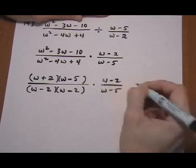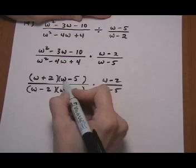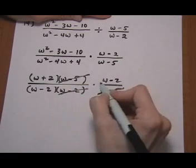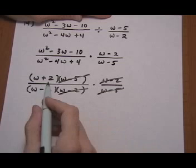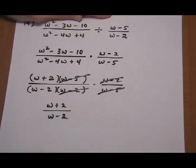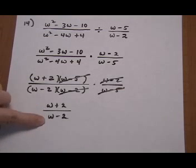Now we start looking for common factors. w - 5 top and bottom—it's gone. w - 2 top and bottom—it's gone. We're left with (w + 2) over (w - 2), and we're going to stop here because we don't want to go in and cancel the w and the w